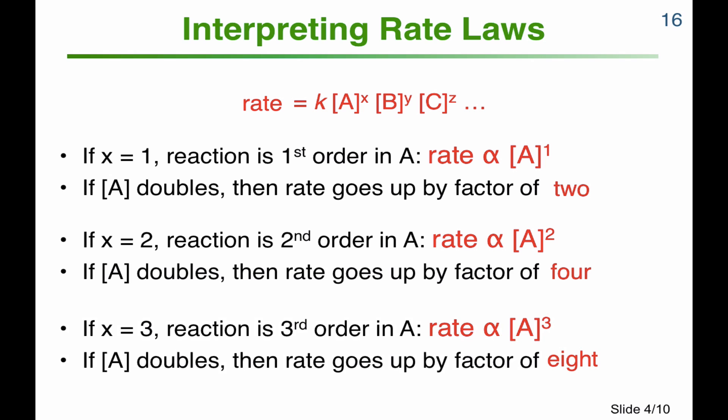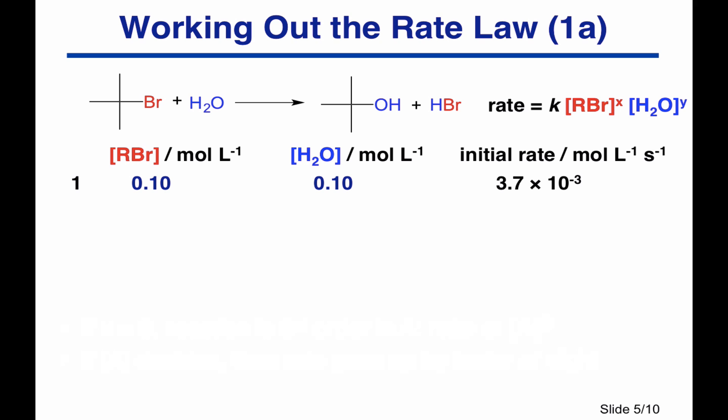We do this for each reactant in turn to work out the order with respect to that reactant. In this experiment, we take our alkyl bromide, react it with water, and form our products. We can vary the initial concentrations of our reactants — the alkyl bromide and water — and measure the rate. In experiment number one, we have 0.1 mol/L of alkyl bromide, 0.1 mol/L of water, and we measure the rate to be 3.7 × 10⁻³ mol/L/s. We then do a second and third experiment.